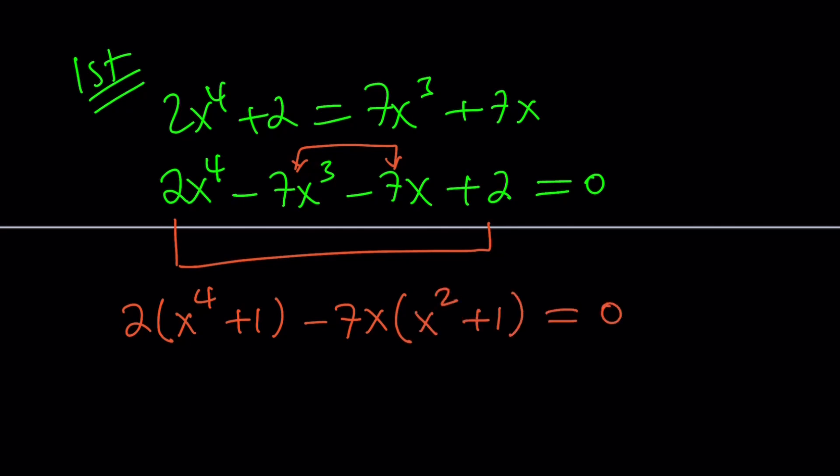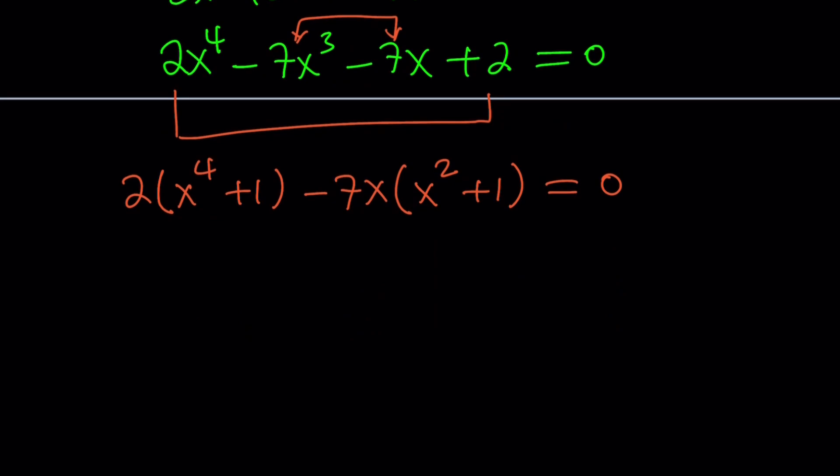Do you think x to the 4th plus 1 contains x squared plus 1? Like difference of two squares, but this is sum of two squares? Unfortunately, no. x to the 4th plus 1 cannot be factored over the reals. It can be factored over the complex numbers because you can basically write this as x squared plus i multiply by x squared minus i, right? And of course, those can be factored as well.